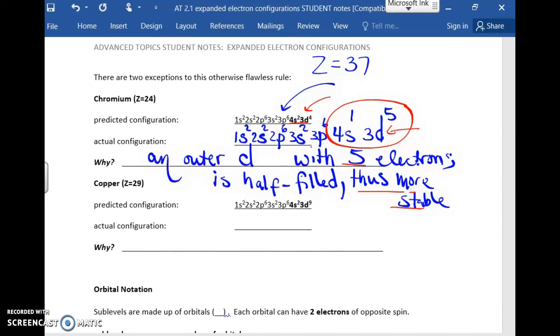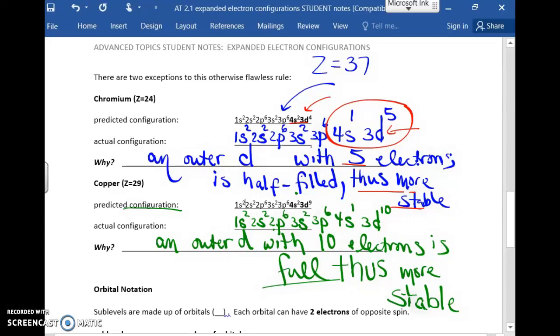There's one other exception. Copper is a similar situation. Again, the predicted configuration is almost perfect. The first five sublevels are great. The order is correct in the last two sublevels, except just as before, one of those two electrons is going to make the transition to the outermost d. An outer d with ten electrons is full, thus it's more stable. So notice, since I can arrive at a full d, this is the preferential. So if you are writing your configuration, by all means write it out, but be sure to make this small change at the end for full credit. Well, my friends, that's the first side. Orbital notation I'll take up in a separate lecture. I hope you found that helpful. Take care.